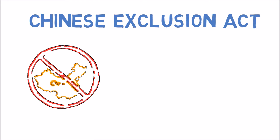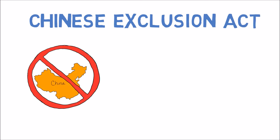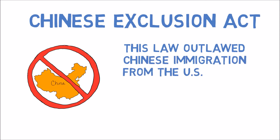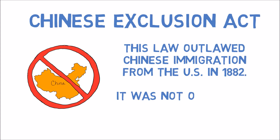Chinese Exclusion Act. This law outlawed Chinese immigration from the U.S. in 1882. It was not overturned until 1943.